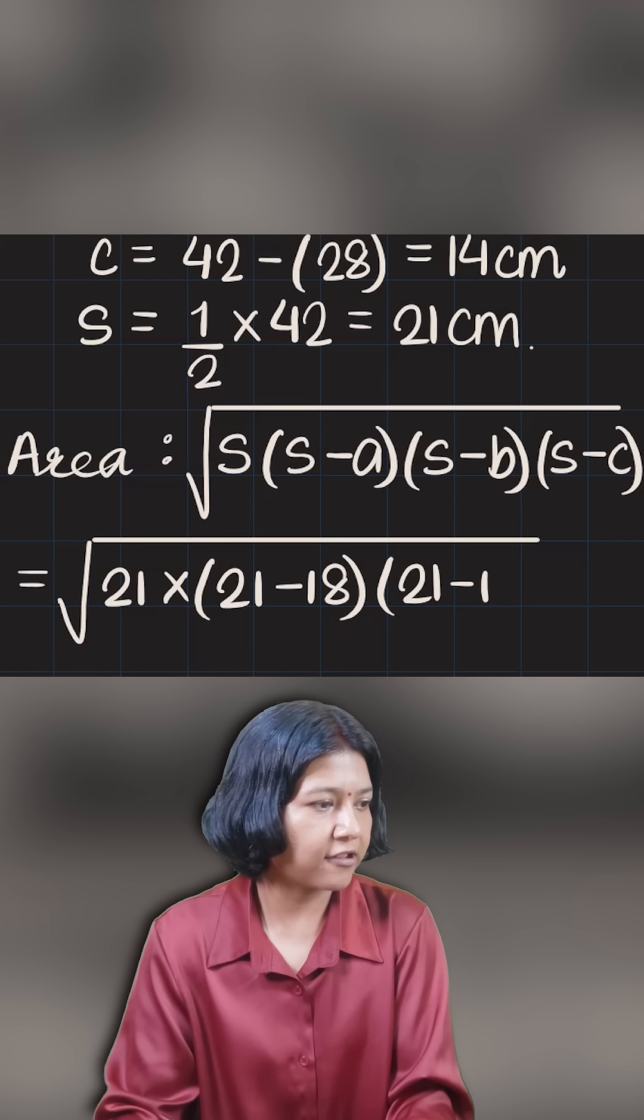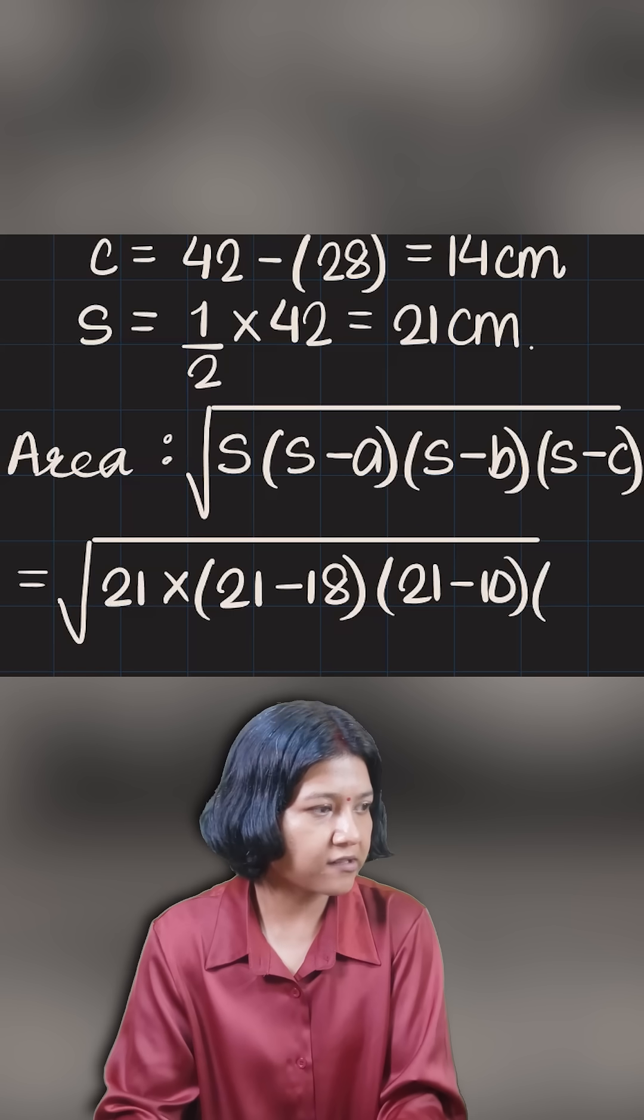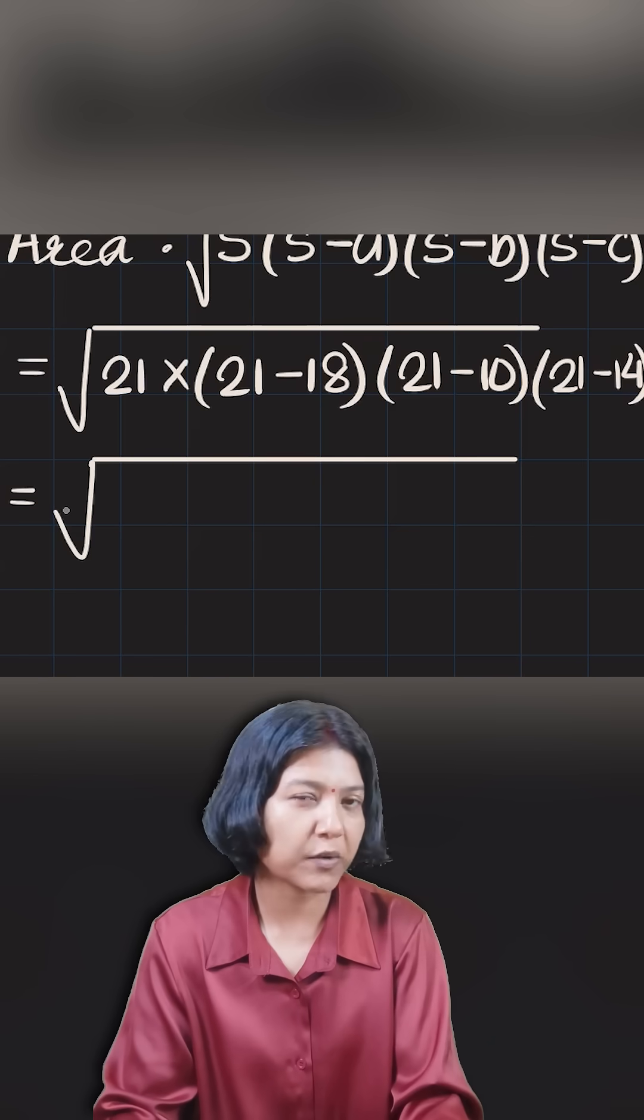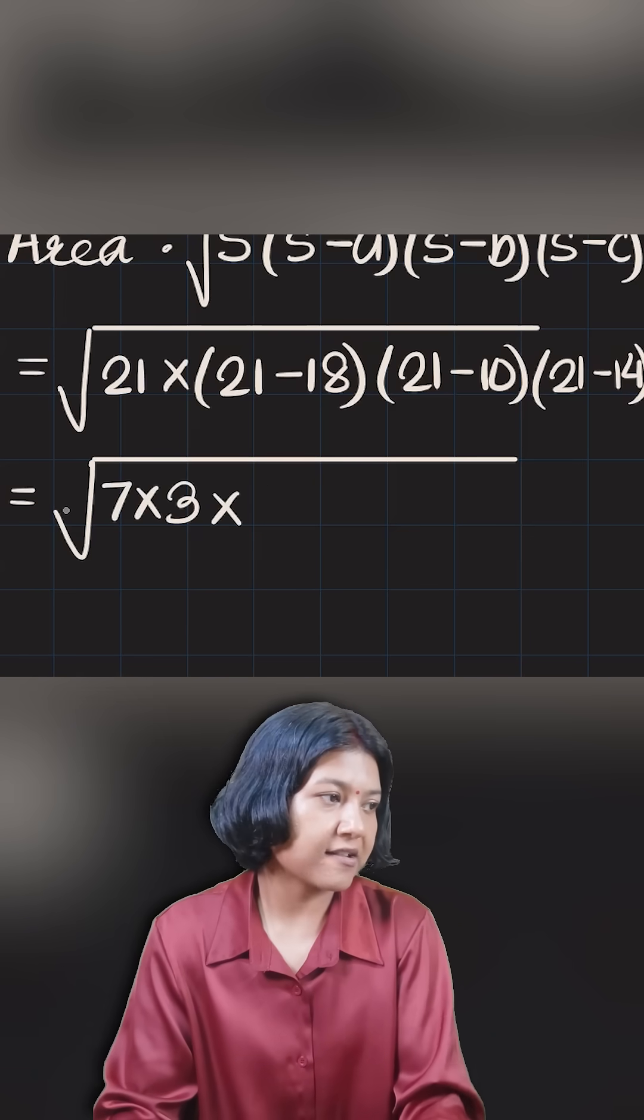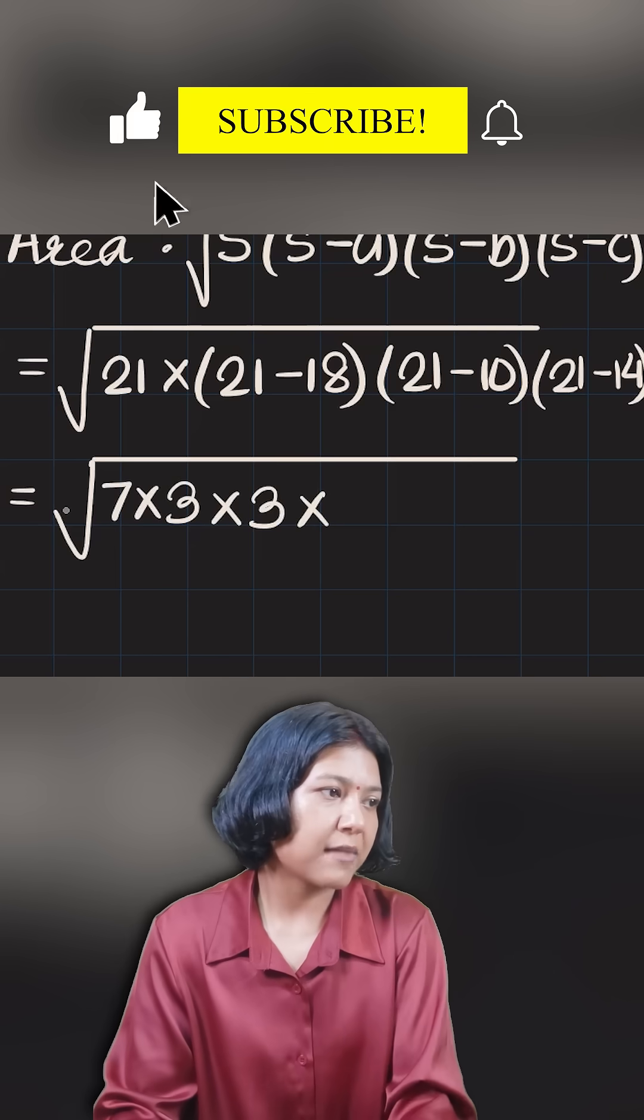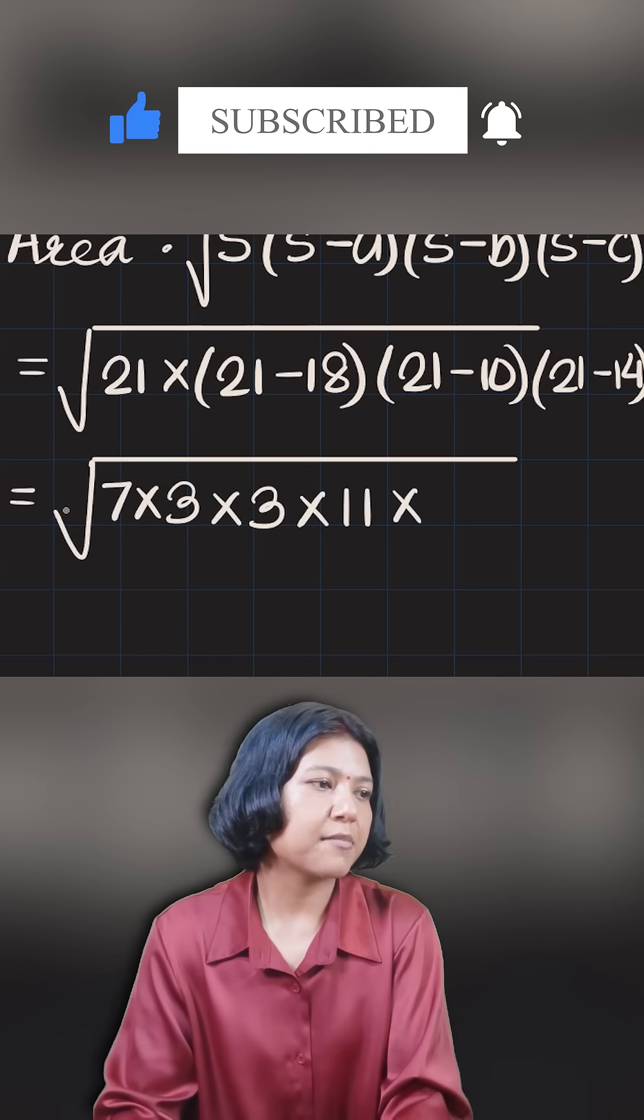Note that the first 21 I can write as 7 times 3 is 21. 21 minus 18 is 3, 21 minus 10 is 11, and 21 minus 14 is 7.